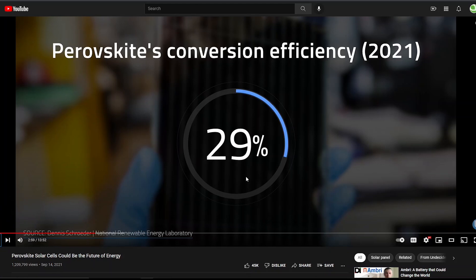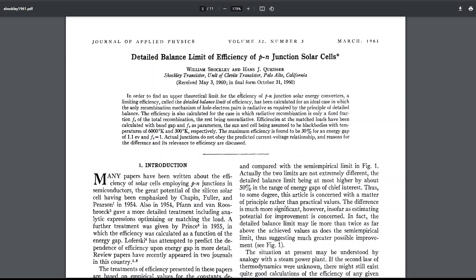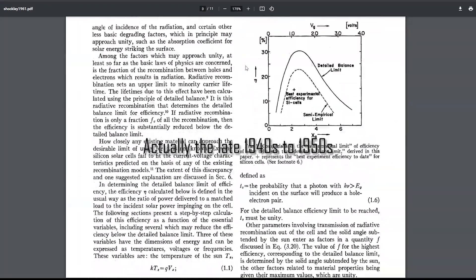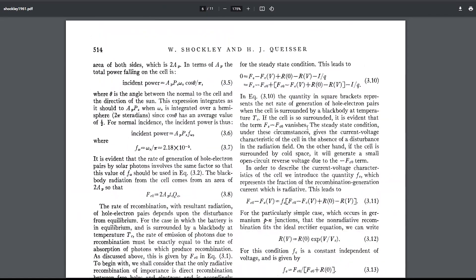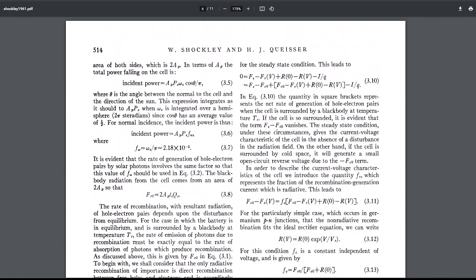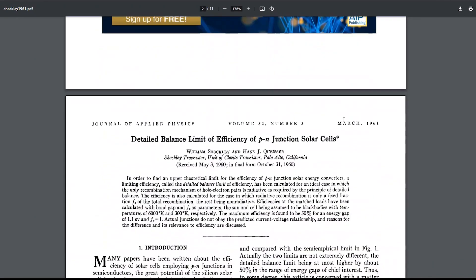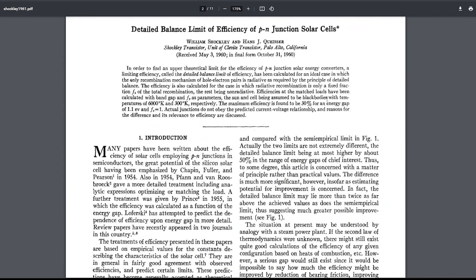And that has to do with Shockley-Queisser limit. This is the paper by William Shockley and Hans Queisser. Basically, if you guys don't know, William Shockley and a couple other people were the inventors of the transistor at Bell Labs back in the 60s. Basically in this paper he talks about the maximum efficiency that you would expect from a solar panel based on its band gap. And they calculated 30 percent for silicon because silicon has a band gap of 1.1 eV.